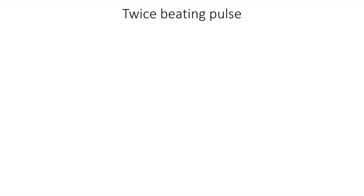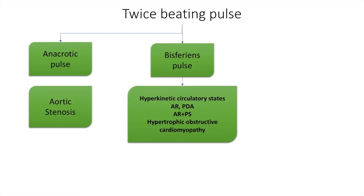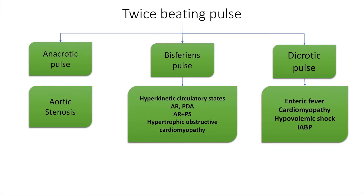We now move on to the twice-beating pulse. The types are an anacrotic pulse, which is most commonly due to aortic stenosis; a bisferiens pulse, which is because of aortic regurgitation, aortic regurgitation and hypertrophic obstructive cardiomyopathy, or aortic regurgitation and aortic stenosis, but can also be caused by hyperkinetic circulatory states and patent ductus arteriosus. There could also be a dicrotic pulse, caused due to enteric fever, cardiomyopathy, hypovolemic shock, and intra-aortic balloon counterpulsation or IABP.